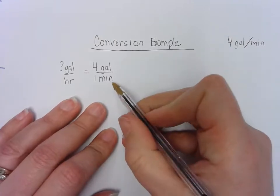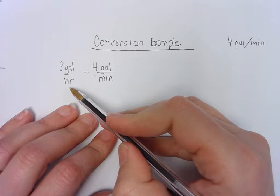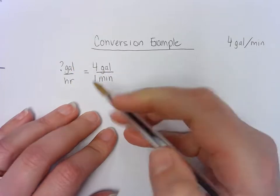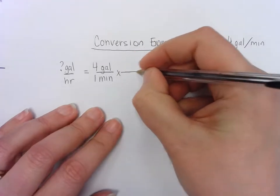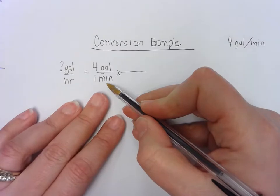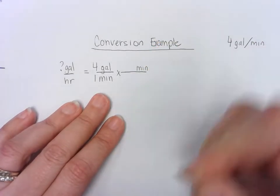If they were asking you to convert four gallons per minute to how many gallons per hour that is, you can see that gallons don't change and the only thing we have to change is minutes to hours. When we do the conversions, remember we are trying to cancel the units. So if our unit is on the bottom of a fraction, when we want to convert it, we're going to have to put it on the top of the next fraction.